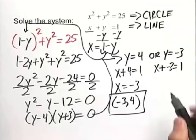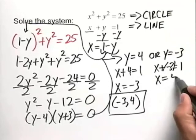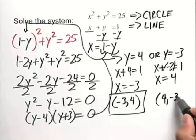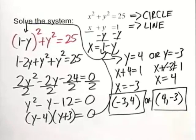And when we add 3 to both sides, we're going to end up with x is equal to 4. And writing this as an ordered pair, we have 4, negative 3, and these are the two ordered pairs at which a circle and a line will intersect.